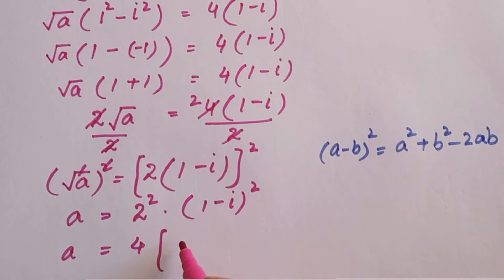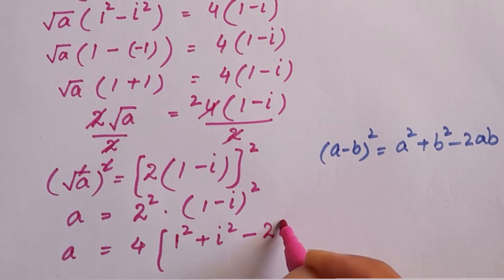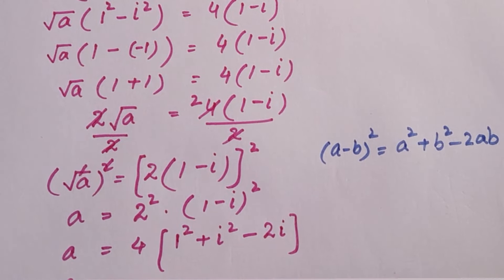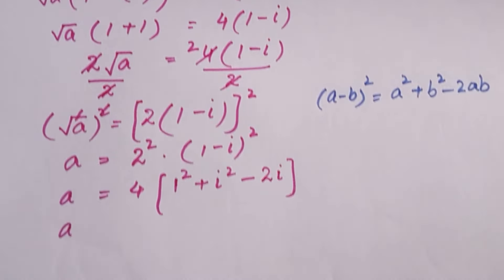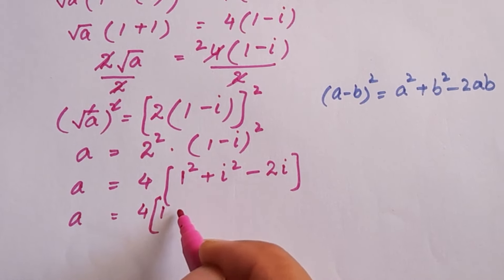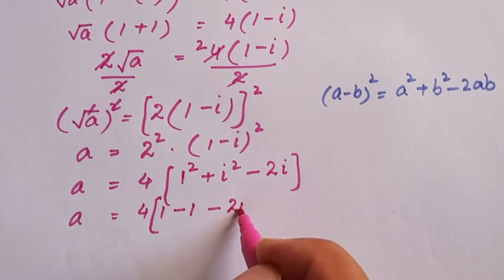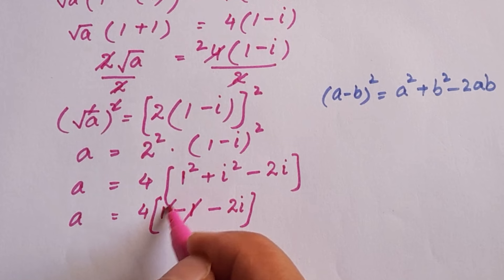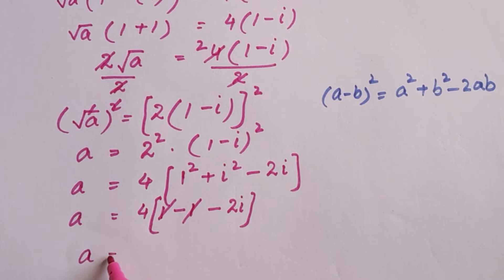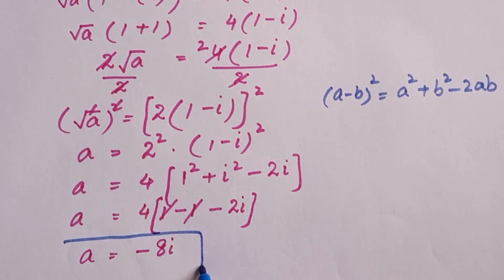A square means 1 square, b square means iota square minus 2 iota. A is equal to 4 times 1 square is 1, iota square is negative 1 minus 2 iota. This positive 1 and negative 1 cancel out. A is equal to 4 times negative 2i, so negative 8 iota. A is equal to negative 8 iota.